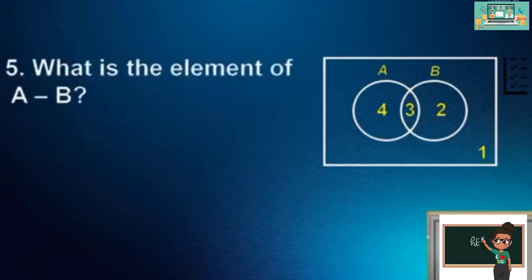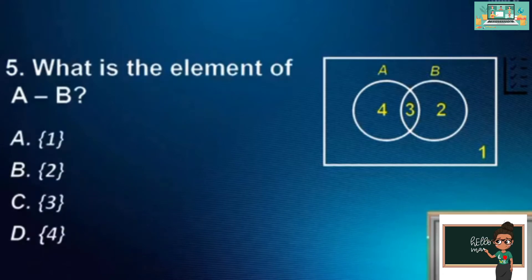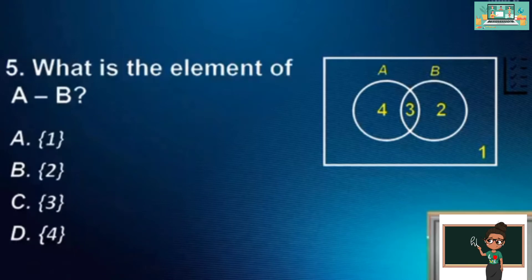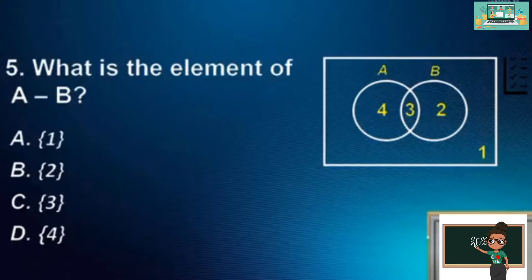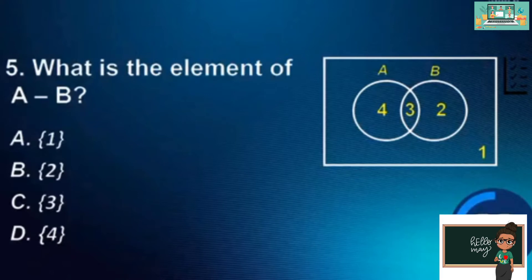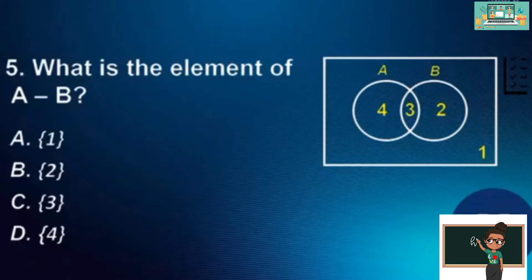Last question, number 5. What is the element of A minus B? A. {1}. B. {2}. C. {3}. D. {4}. The correct answer is D.